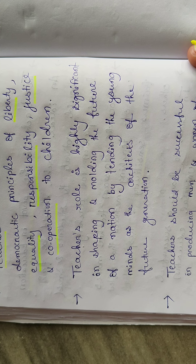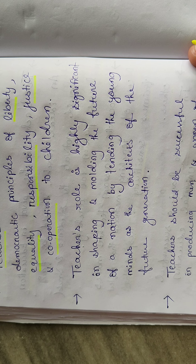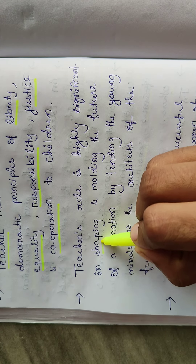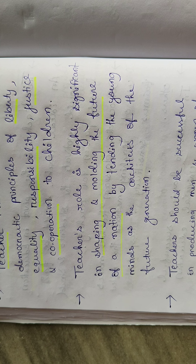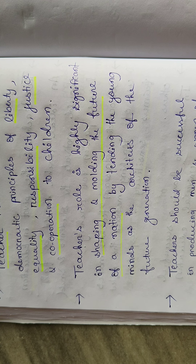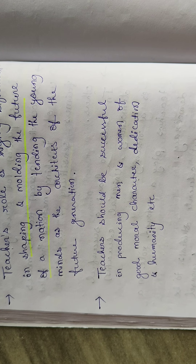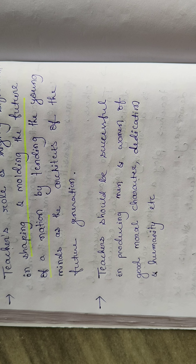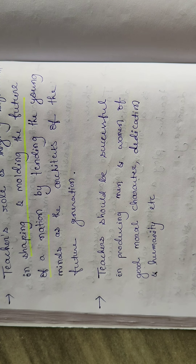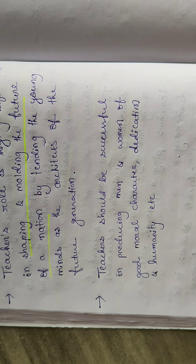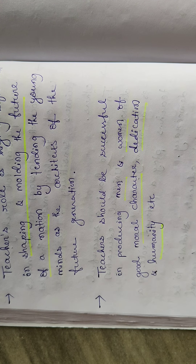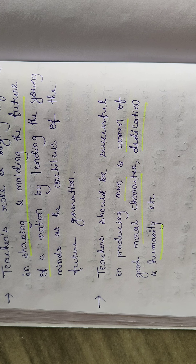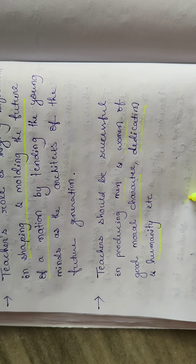A teacher's role is highly significant in shaping and modeling the future of a nation by tending the young minds — the teacher is the architect of the future generation. Teachers should be successful in producing men and women of good moral character, dedication, and humanity. That is why the teacher is called a democrat.